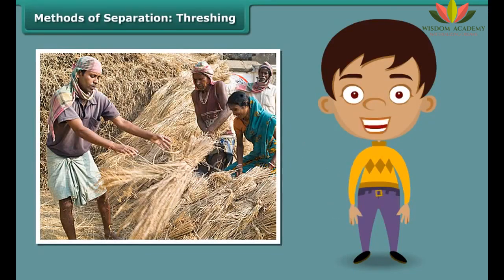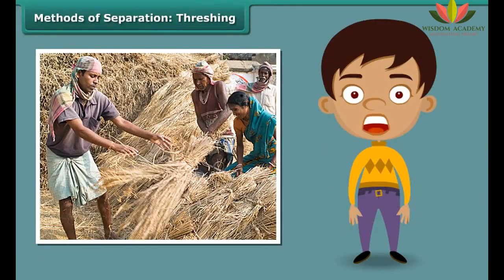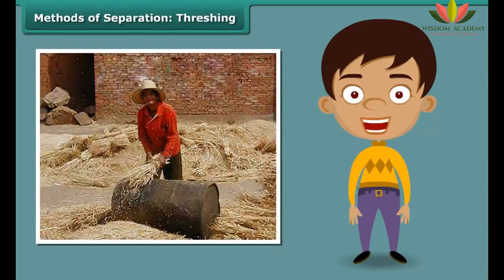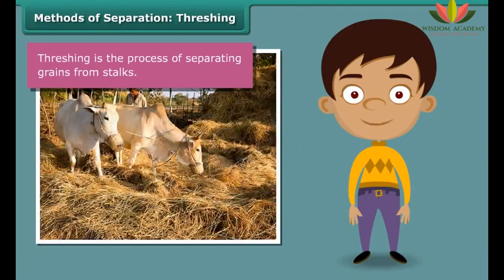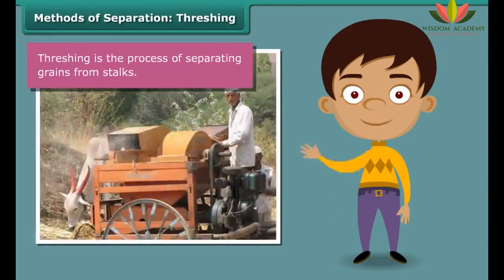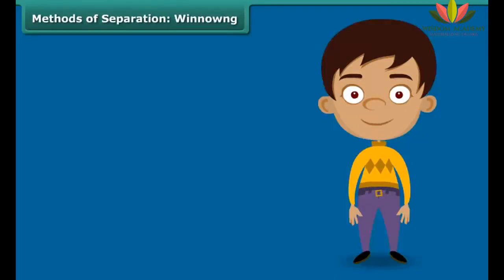You must have seen bundles of wheat or paddy stalks lying in fields after harvest. Have you pondered how a farmer separates the grains from these stalks? Once the wheat or paddy crop is harvested, the farmer ties the stalks together to form bundles. He then leaves the bundles to dry in the sun. Once the stalks are completely dried, the farmer beats them against a hard floor to free the grains. This process of separating grains from stalks is known as threshing.